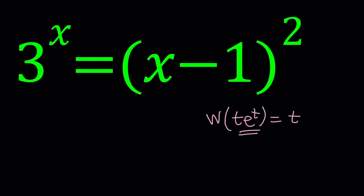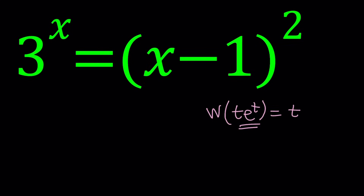First of all the base is three — we'll take care of that later by turning it into e. I want to square root both sides because we need to get rid of the squared term. We don't have x squared here, let alone (x−1) squared, so it will be better if we can linearize this.